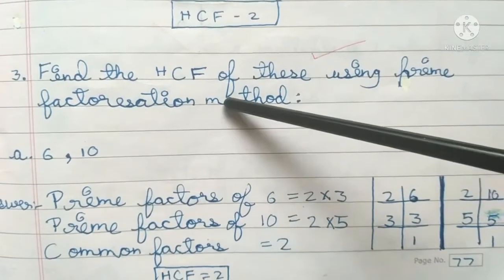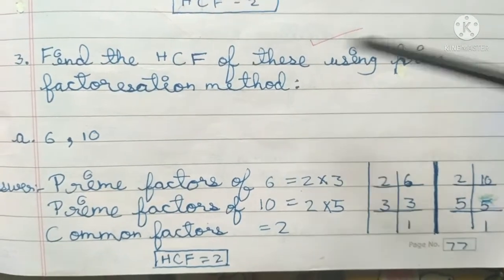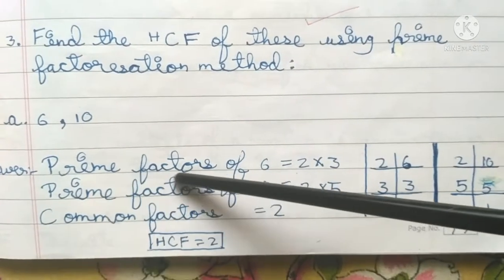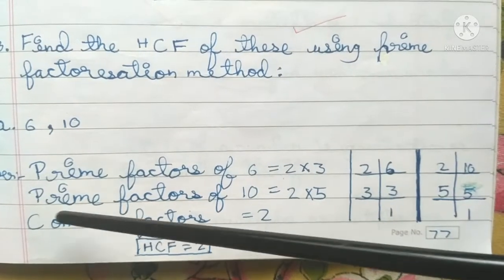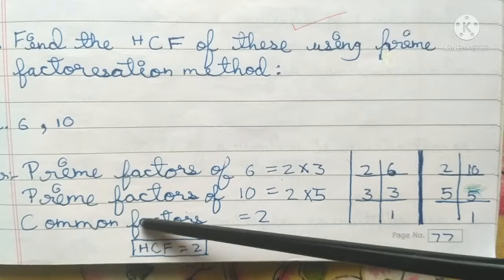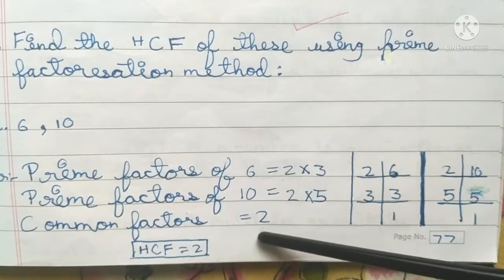Third problem: find the HCF of these using prime factorization method. 6 and 10. Answer: prime factors of 6 are 2×3; prime factors of 10 are 2×5. Common factor is 2. HCF is 2.